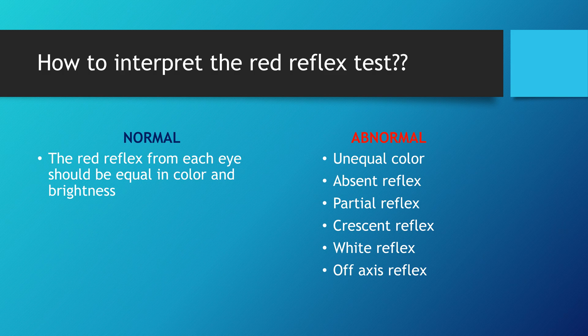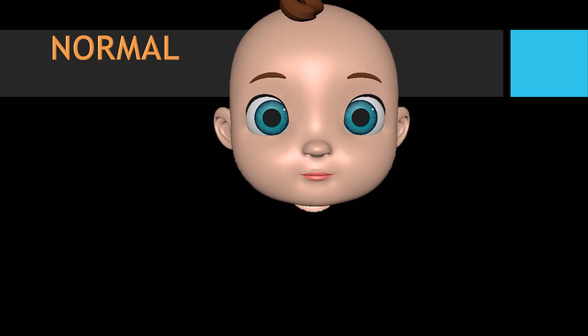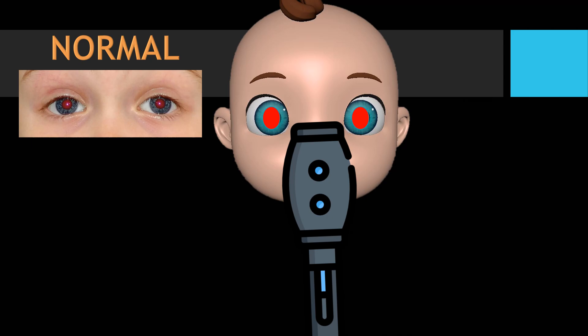So how to interpret? In a normal eye, the reflex from each eye will be equal in colour and equal in brightness. In an abnormal condition, the reflex between both eyes may be unequal, absent, or partial. It can be crescent-shaped, white, or an off-axis reflex. In a normal eye, when you shine the light on the subject's eye, we see a red reflex — both reflexes in both eyes are equally red in colour and bright.